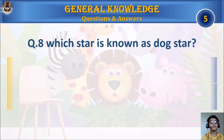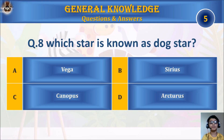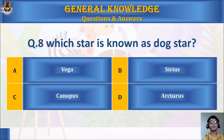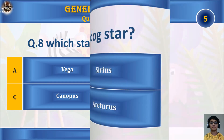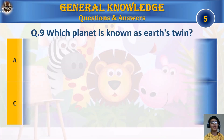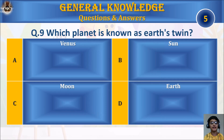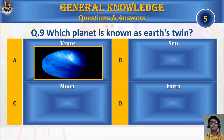Question 8: Which star is known as dark star? A. Vega, B. Sirius, C. Canopus, or D. Arcturus? Your time starts. The answer is B. Sirius.